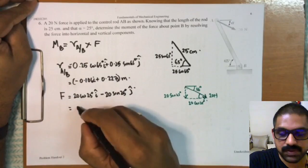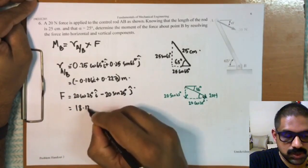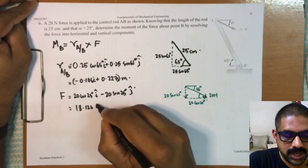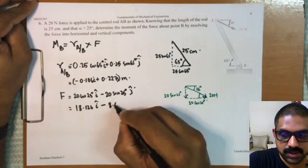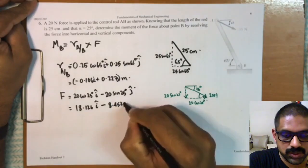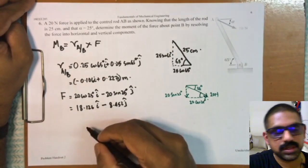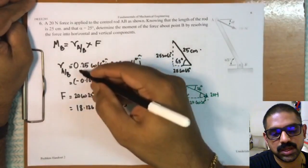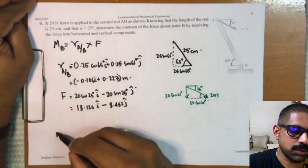So now it is just to find the moment of this force, that is just the cross product of r_AB and F. So moment of the force, just like the earlier problem that we solved, will be the determinant of this matrix given here...